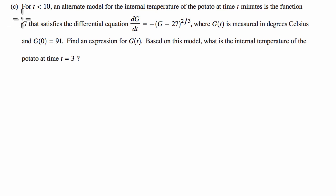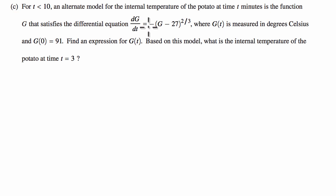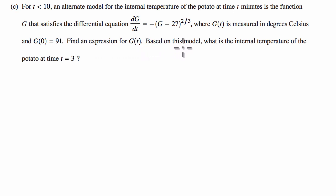Let's now tackle part c, which tells us for t less than 10, an alternate model for the internal temperature of the potato at time t minutes is the function g that satisfies the differential equation: the derivative of g with respect to t is equal to negative g minus 27 to the 2/3rds power, where g of t is measured in degrees Celsius and g of 0 is equal to 91. Find an expression for g of t, and based on this model, what is the internal temperature of the potato at time t equals 3?